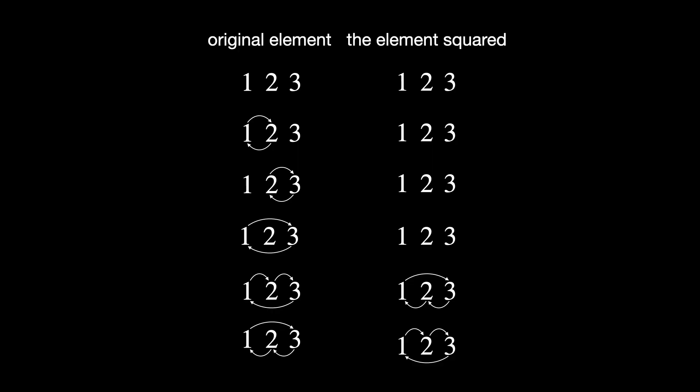When we square a permutation, we are effectively applying it twice in succession. One is the identity permutation 1, 2, 3, or simply id. Squaring it means id times id, which equals id. So the result is the identity. No change. It's the first element since it's the identity.